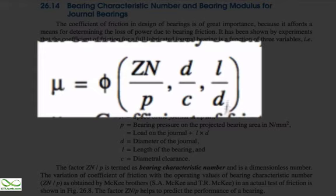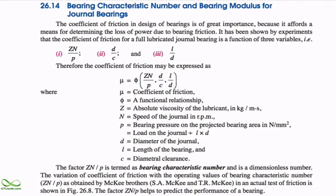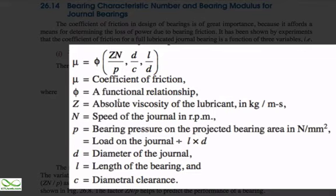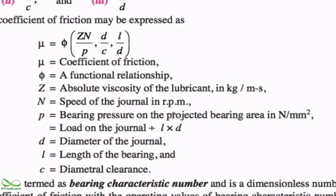Hence we can write that the coefficient of friction μ is a function φ of ZN/P, D/C, and L/D, where μ is the coefficient of friction, Z is absolute viscosity, N is the speed of the journal bearing in RPM, P is the bearing pressure on the projected bearing area (projected area = L × D, i.e., length of journal times diameter of journal). Bearing pressure equals load on journal divided by the projected area. C is the diametral clearance, the difference between the diameter of the journal and the diameter of the bearing cavity.